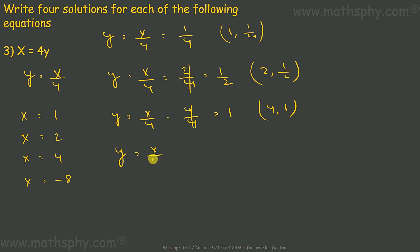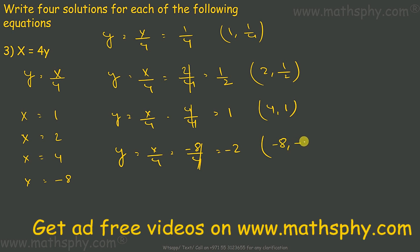Fourth can be, x is negative 8 over 4 means negative 2, means x is negative 8, y is negative 2. Done?